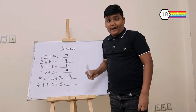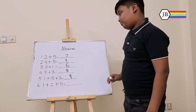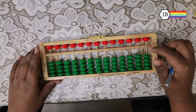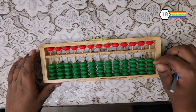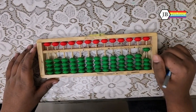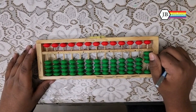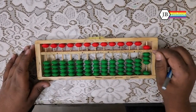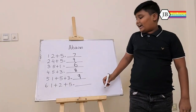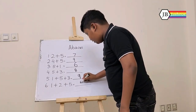Now, the final question is 1 plus 2 plus 5. So the first number is 1. Then we need to add 2. And finally, we need to add 5. So the answer is 8. Now let's write 8 as our final answer.